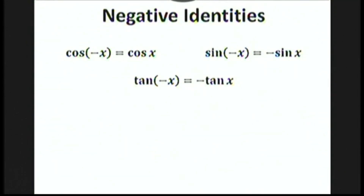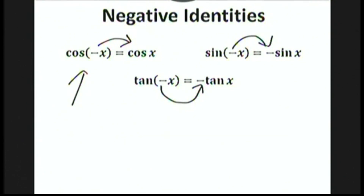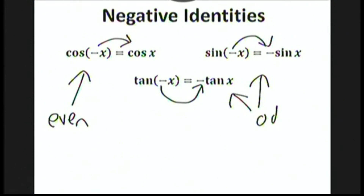Next, we have the negative identities. The cosine of minus x is just cosine x — in other words, the minus sign just goes away. The sine of minus x is minus sine x; we can pull the minus sign out in front. Same goes for tangent — we can pull the minus sign out in front. Those familiar with even and odd functions will notice that cosine of x is an even function, and sine x and tan x are odd functions.